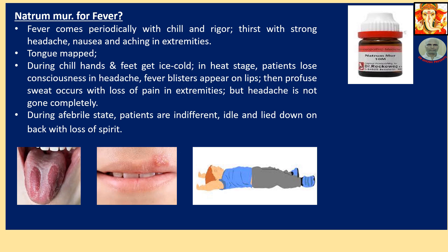Natrium Muriaticum for fever. Fever comes periodically with chill and rigor — chill means cold sensation, rigor is vibration of the body — with strong headache, nausea, and aching in the extremities. Tongue is mapped, as shown in the image. During chill, hands and feet get ice cold. In the heat stage, patient loses consciousness and has headache. Fever blisters appear on the lips. Then profuse sweat occurs with loss of pain in extremities, though headache does not go completely. During the afebrile state (when there is no fever), patients are indifferent, idle, and lie down on the back with loss of spirit.